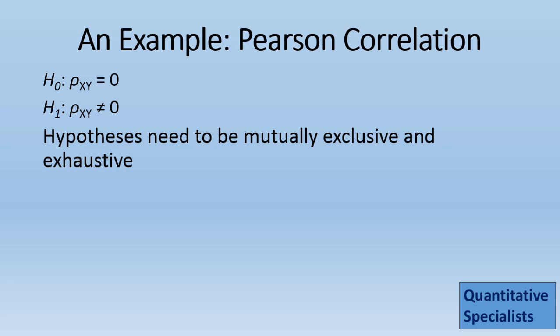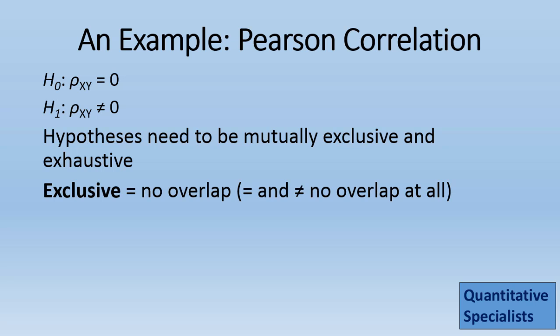Hypotheses need to be mutually exclusive and exhaustive. Exclusive means there's no overlap between the null and the alternative. Looking at our two statements — rho xy equals 0 and rho xy does not equal 0 — notice that those do not overlap at all. Equals and not-equals are completely non-overlapping: it's either 0 (the null) or it's not 0 (the alternative). So they're completely exclusive; they do not overlap.